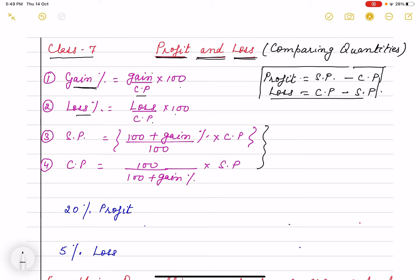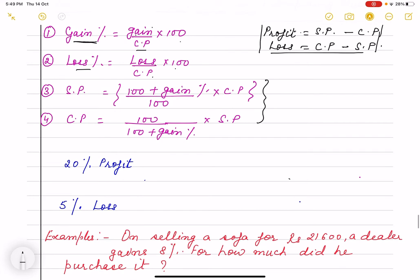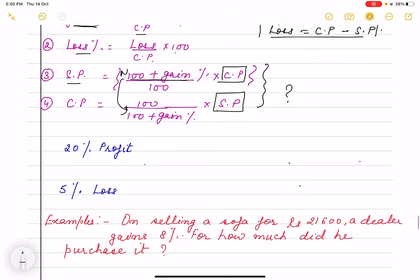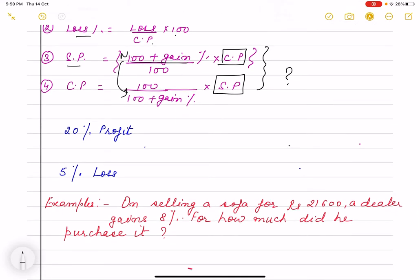Sometimes you use these formulas but I feel that you just remember it and you confuse that when we put CP and when we put SP, or when it is 100 plus gain percent is in numerator. Later sometimes it is in denominator and you confuse with this. So we have alternative methods. So in this I am going to explain you all alternative methods and whichever method you like you can go for it.